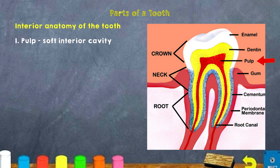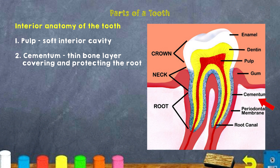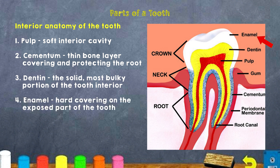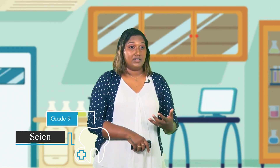Let us also take a look at the interior anatomy of a tooth. You can see there is the pulp, which is a soft interior cavity. There is the cementum, which is a thin bone layer covering or protecting the root. There is the dentin, which is the solid mostly bulky portion of the tooth, and there's also the enamel, which is the hard covering on the exposed part of the tooth. The part that you see in your mouth right now is what we call the enamel.